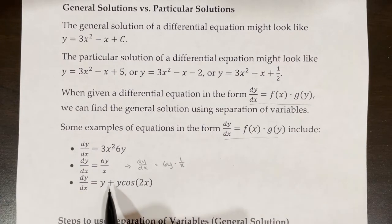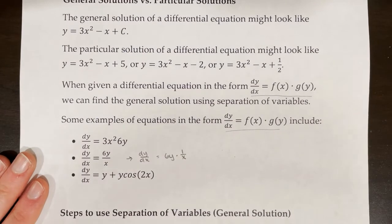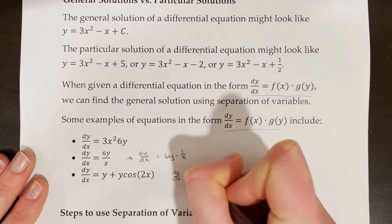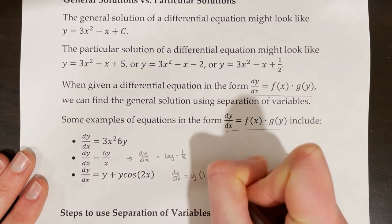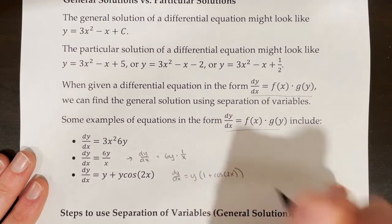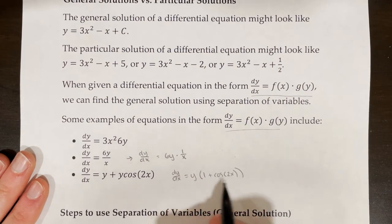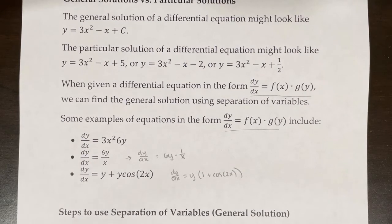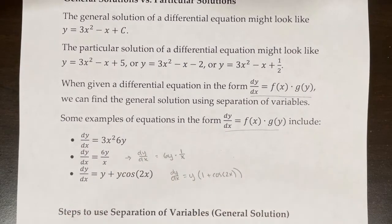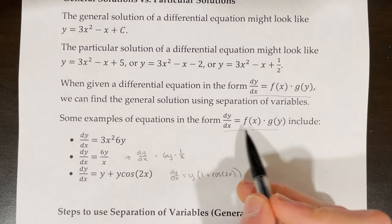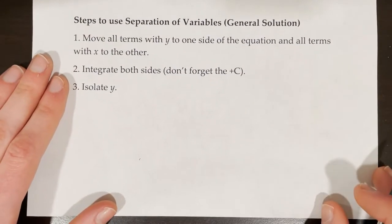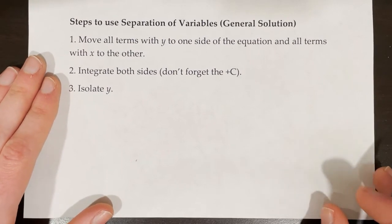We could also look at dy/dx = y + y·cos(2x). In that case, we could factor to get dy/dx = y·(1 + cos(2x)), giving us our equation in terms of y times our equation in terms of x — so that would be another separable equation. If we have our differential equation in the format f(x)·g(y), we can use separation of variables to determine the general solution.